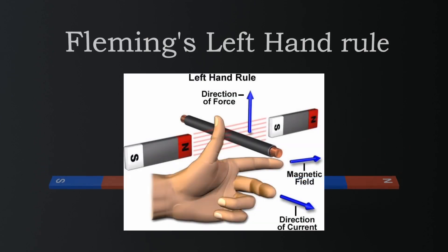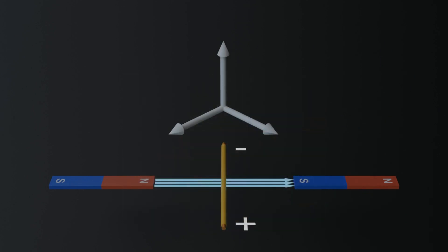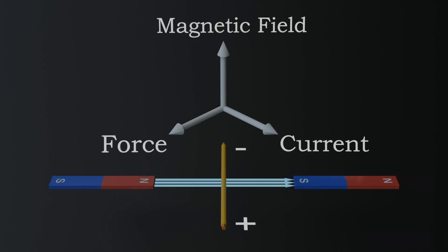Fleming's left-hand rule helps us determine the direction of this force. Imagine three perpendicular axes. The second axis represents the direction of the magnetic field, which flows from the north pole to the south pole. The first axis shows the direction of the current in the wire, which is the flow of electric charge. Now, the third axis perpendicular to both the magnetic field and the current points in the direction of the force acting on the conductor.